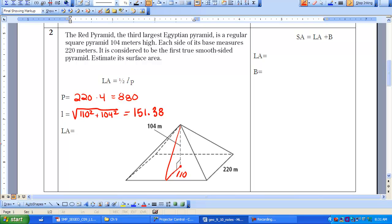So now I have all the values that I need in order to find the lateral area. So I'm going to plug that in to one-half times the slant height, which is 151.38, times the perimeter, which is 880. So when I do that calculation, I get my lateral area to be 66,607.3 meters.